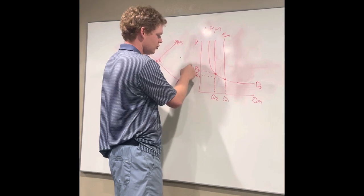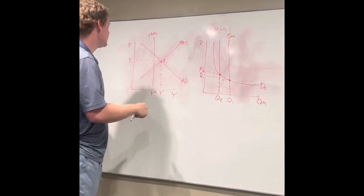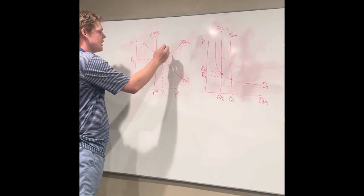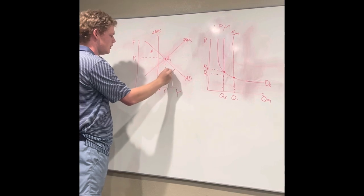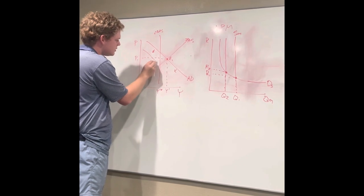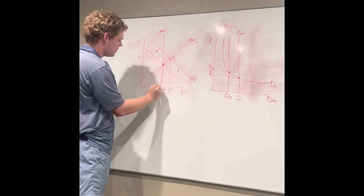So your interest rate would raise and your quantity would fall. And back to the ADAS model, what that would do for this is it would bring your demand down. Down back to here, where you'd now be back on the long-run aggregate supply, so you'd be at potential output.